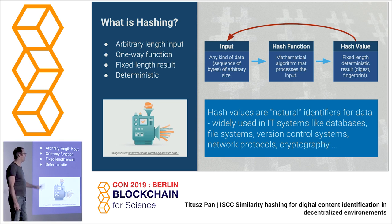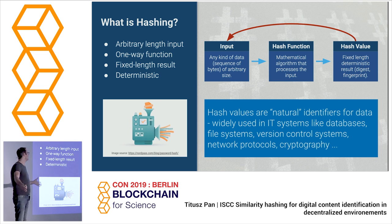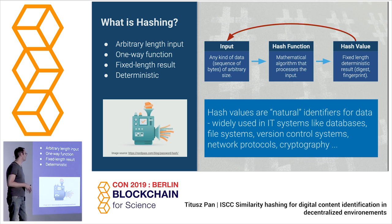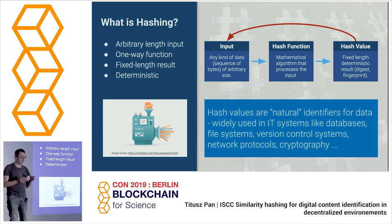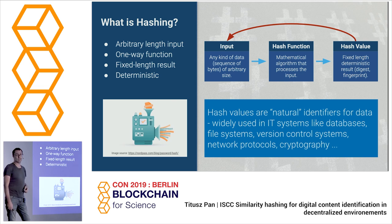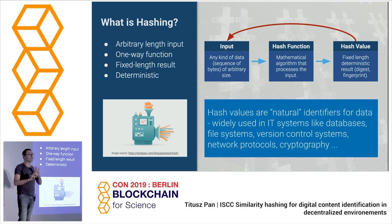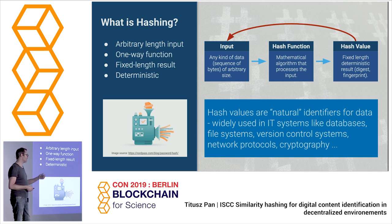Hashing is a very simple thing: you take some arbitrary-length data input, put it into a function, and get something of a fixed, short length which is deterministic — every time you put in the same data, you get the same result. You cannot refer back to the data from the hash value you created. Hash values are natural identifiers for data, widely used in IT systems like databases, file systems, version control systems, network protocols, and cryptography.